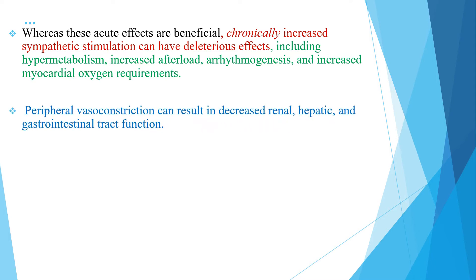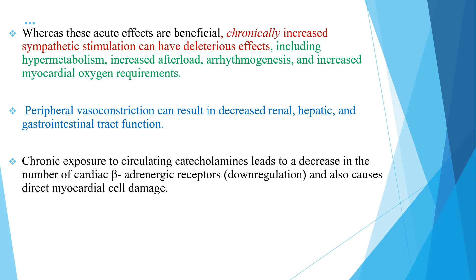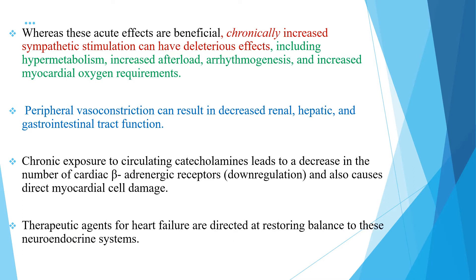Peripheral vasoconstriction can result in decreased renal, hepatic, and gastrointestinal tract function. Chronic exposure to circulating catecholamines leads to a decrease in the number of cardiac beta-adrenergic receptors by down-regulation and also causes direct myocardial cell damage. Therapeutic agents for heart failure are directed at restoring balance to these neuroendocrine systems.